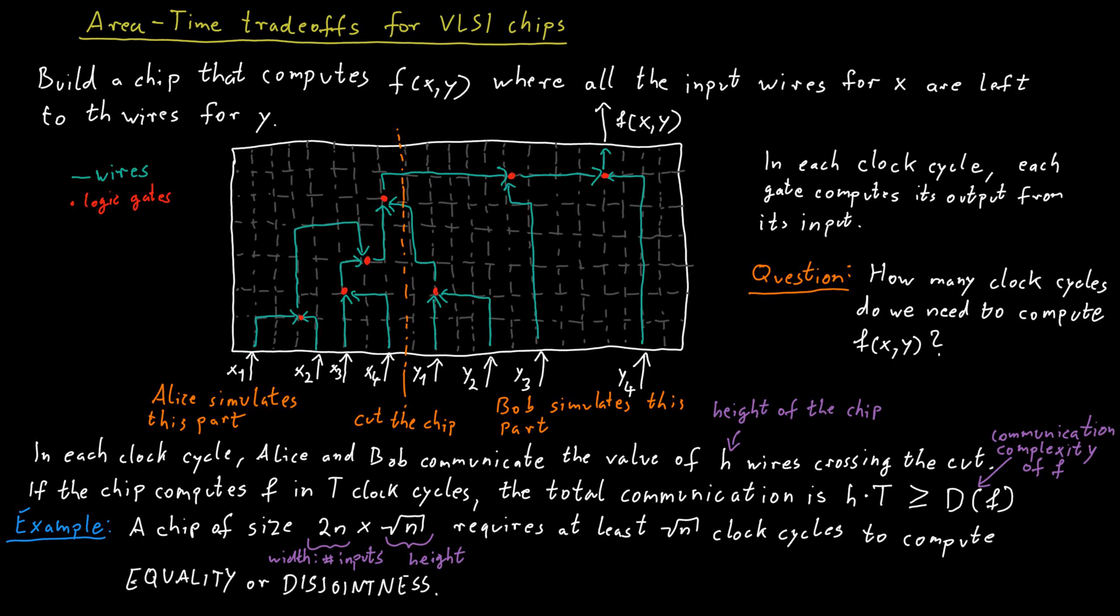We can increase the height of the chip to potentially decrease the number of clock cycles required to compute these functions. Or we can decrease the height of the chip, but then risk that we need more time, more clock cycles to compute this function. So there's a certain tradeoff here and communication complexity tells us what that tradeoff is.